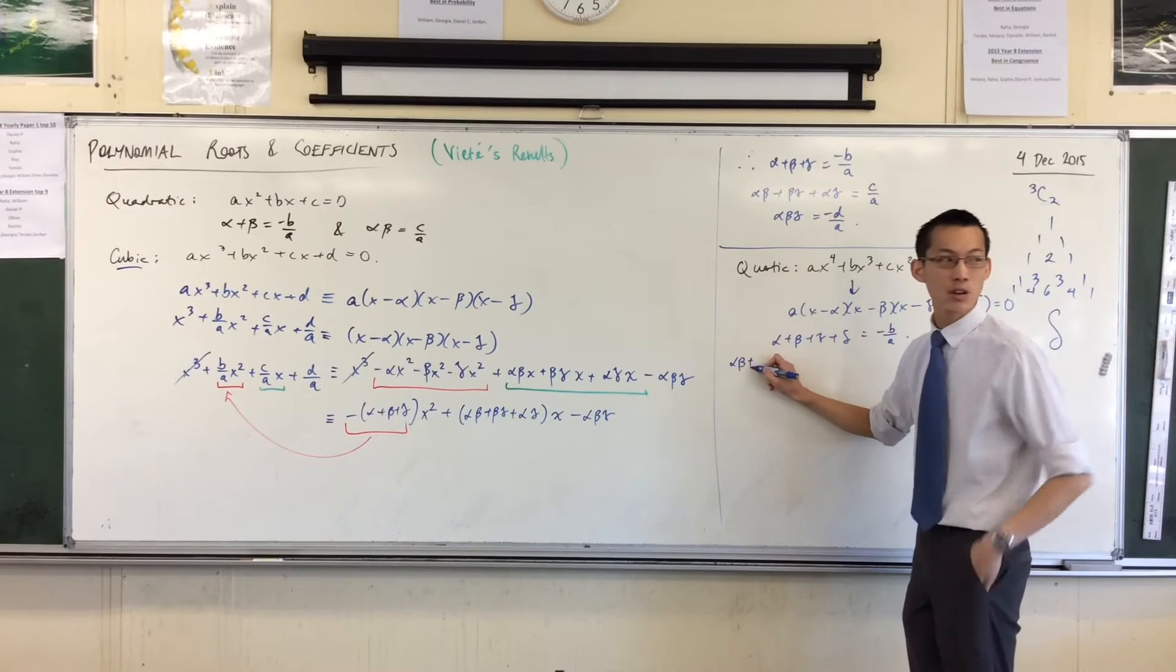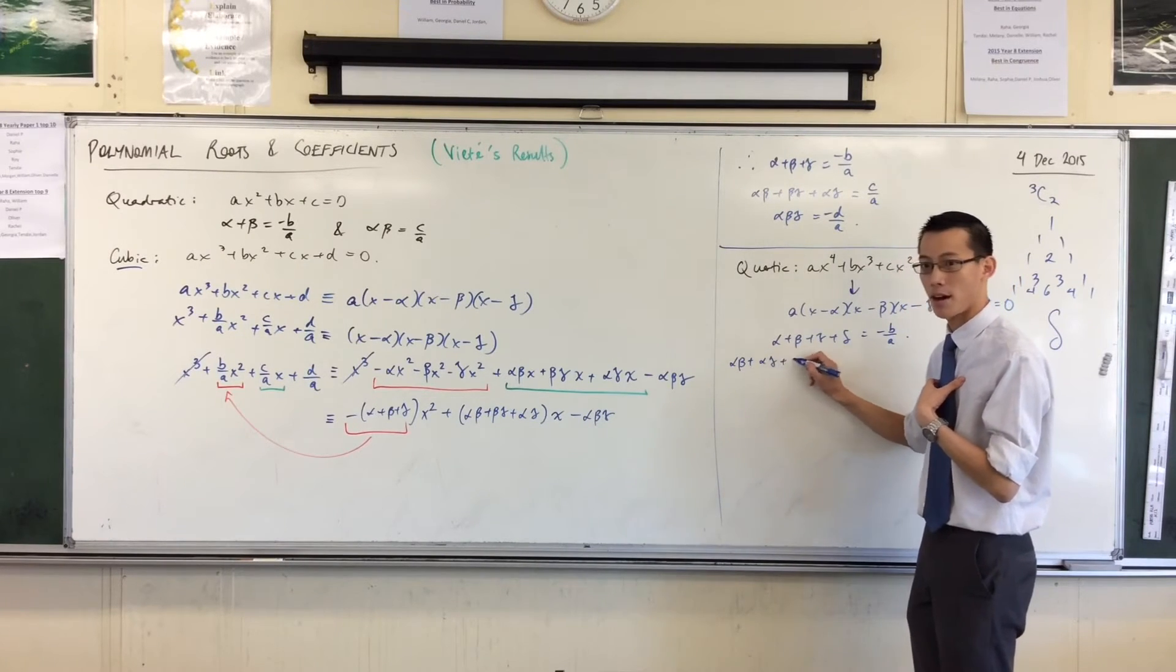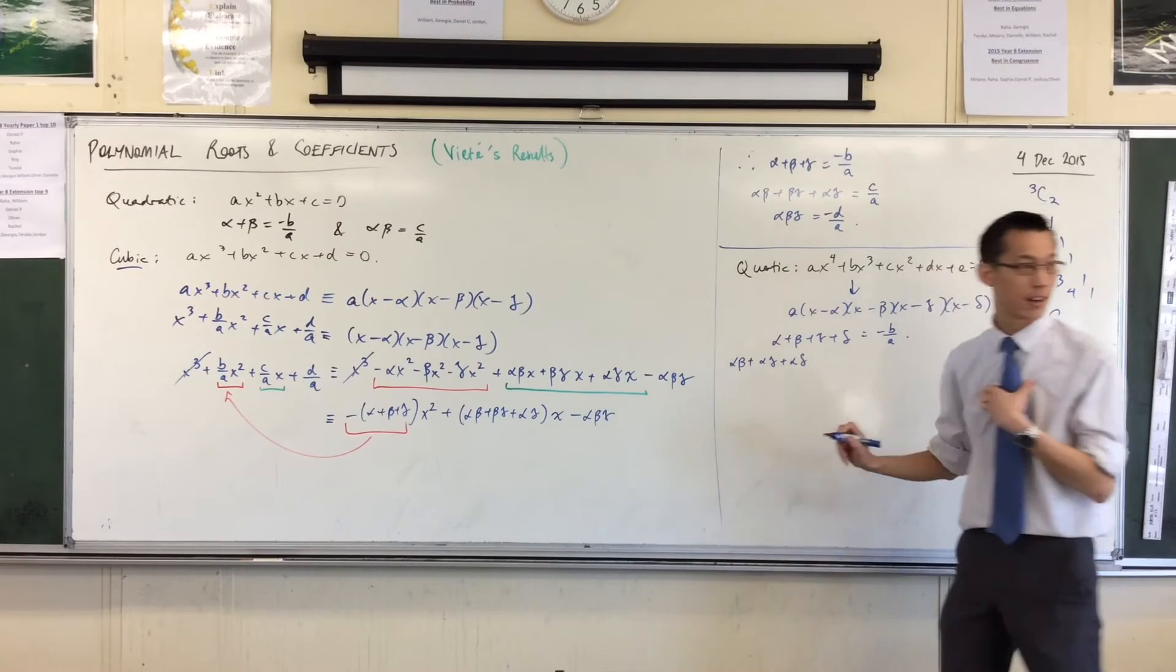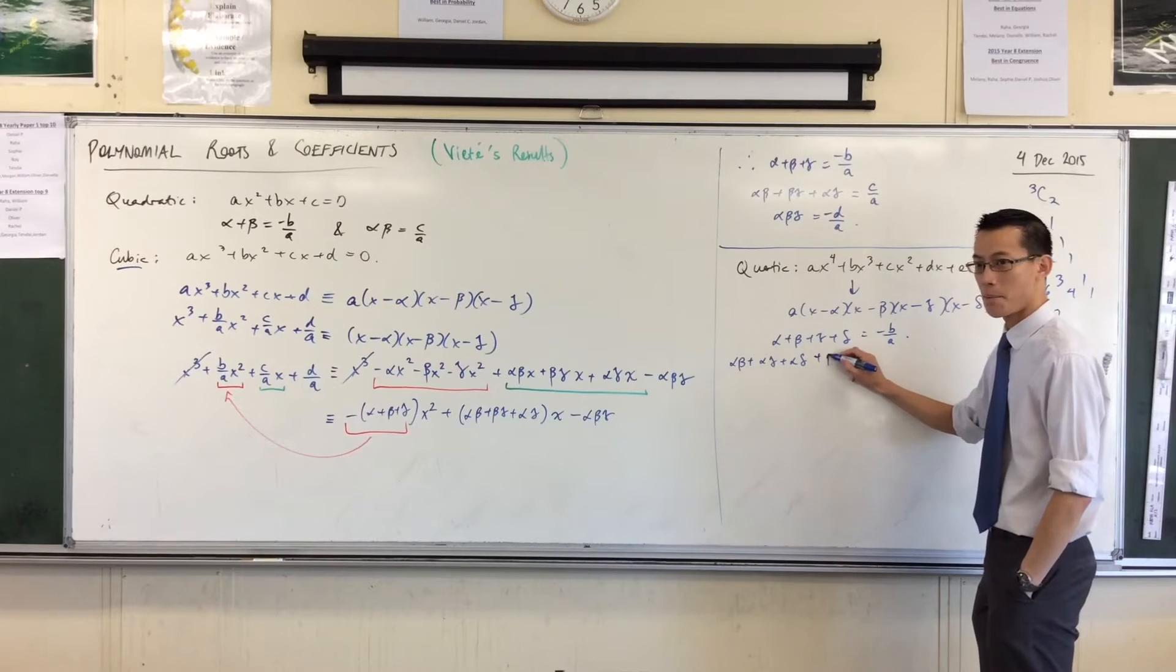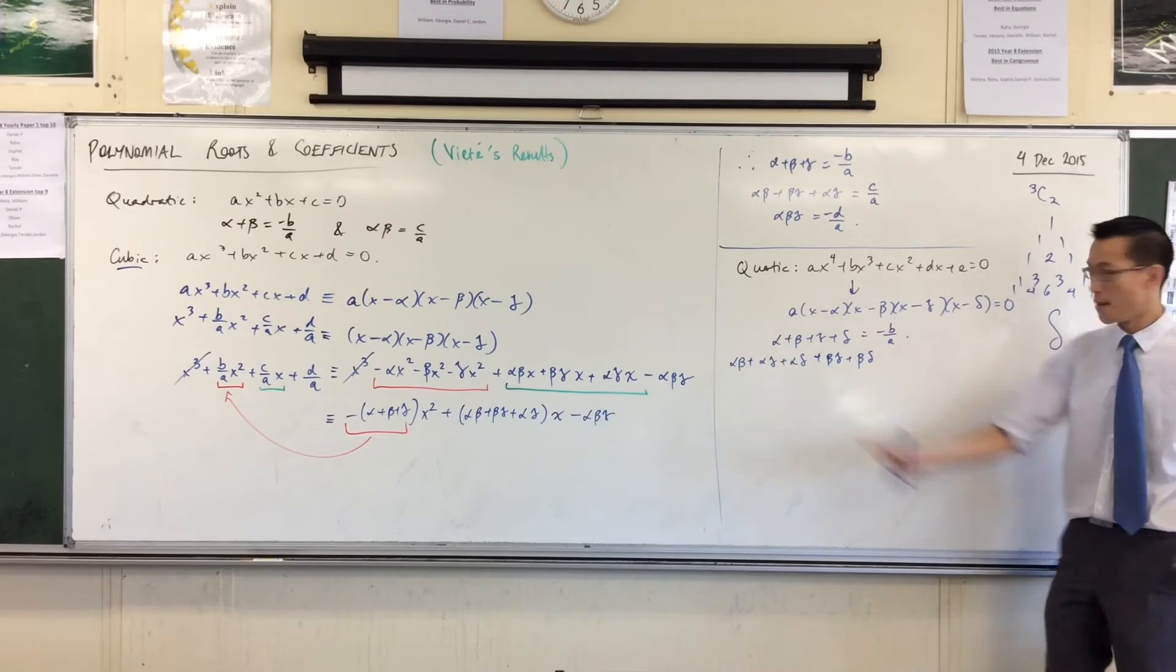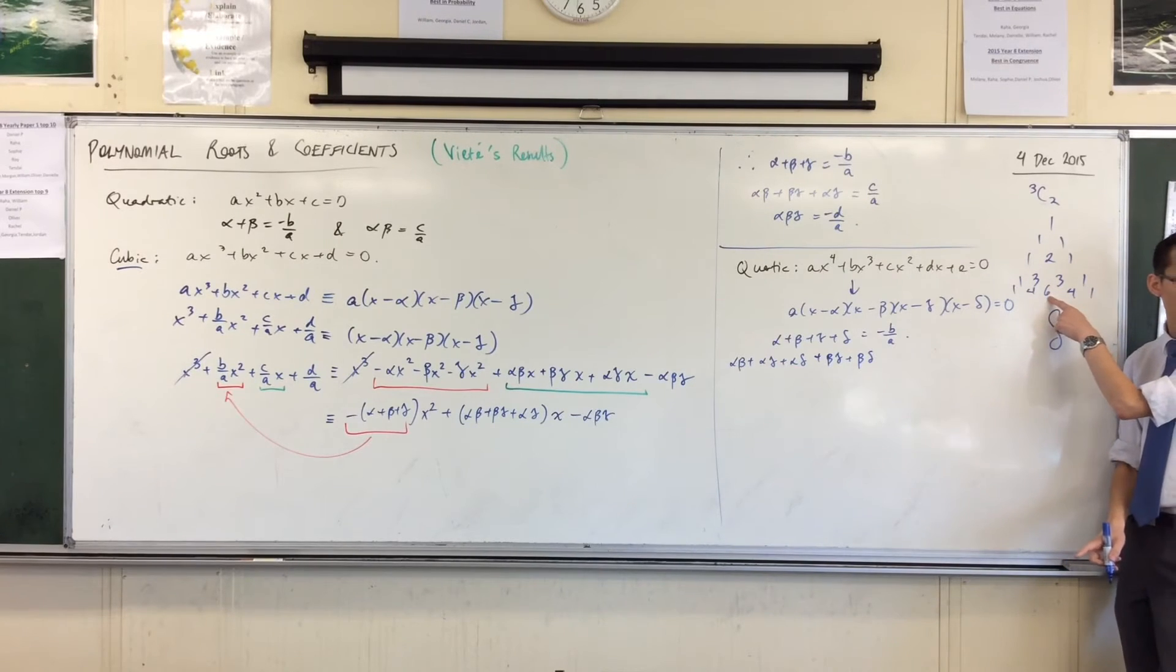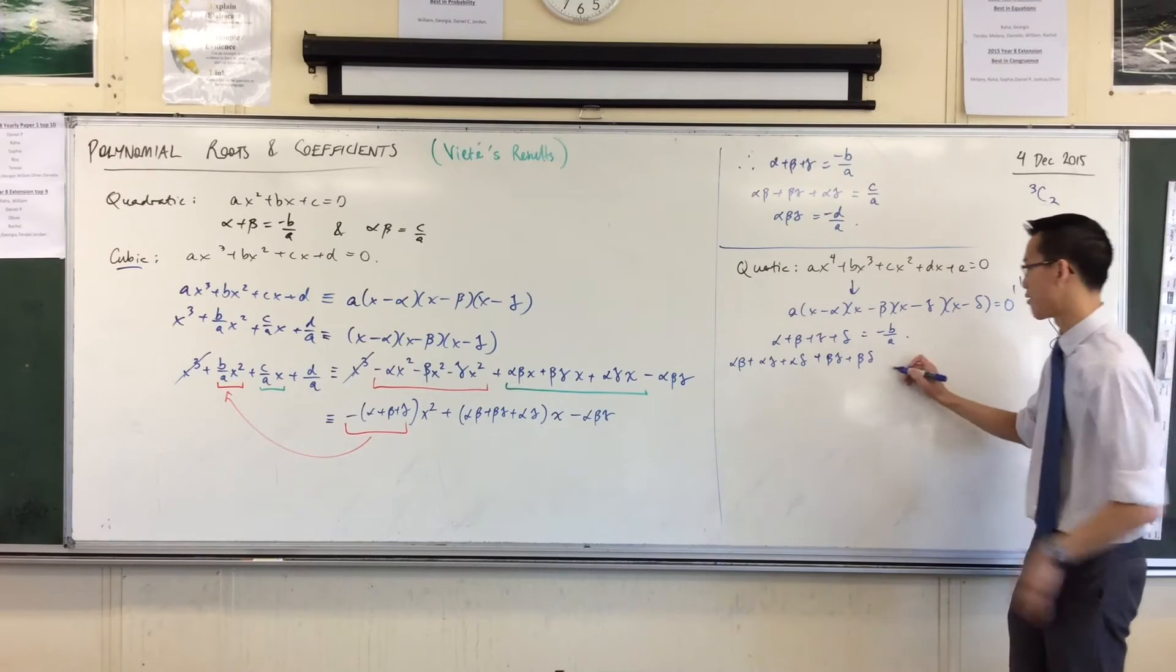Alpha, beta. I tend to do all the alphas first. So I'll go alpha beta, alpha gamma, alpha delta. Then I do all the betas next. I've already done alpha beta, so I'll do beta gamma, and beta delta. Now look, I've got five. Pascal's Triangle tells me I'm only missing one more, which is the gamma delta, the very last pair.